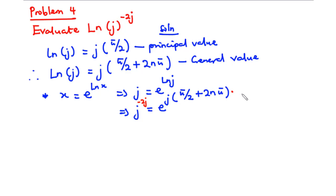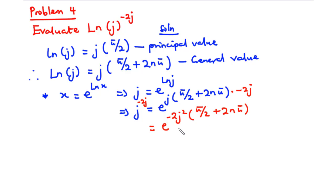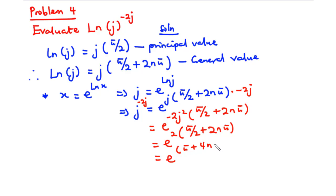Raising both sides to the power negative 2j, the right-hand side becomes e to the power (j times negative 2j) times (pi over 2 plus 2n·pi), which equals e to the power (negative 2j squared) times (pi over 2 plus 2n·pi). Since j squared equals negative 1, negative 2 times negative 1 gives 2. So we have e to the power 2 times (pi over 2 plus 2n·pi). Multiplying through: 2 times pi over 2 is pi, and 2 times 2n·pi is 4n·pi. Therefore, j to the negative 2j equals e to the power pi times (1 plus 4n).